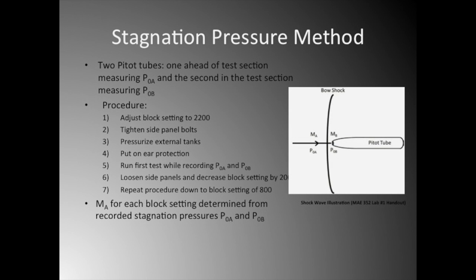The first method we used to relate the tunnel Mach number to the throat area was through stagnation pressure. The apparatus consisted of two pitot tubes: one mounted ahead of the test section measuring P0A, and the second in the test section measuring P0B.